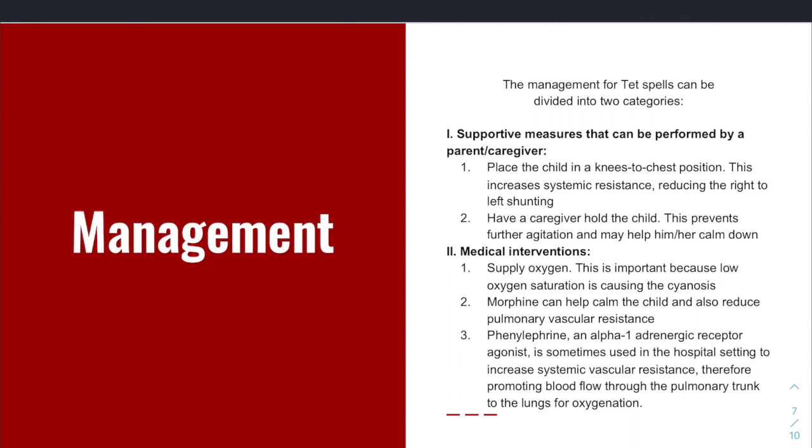Let's talk management. It's important that you assess the prognosis of the baby for what they need. Supportive measurements can be performed by patients and caregivers. So one thing that helps is holding the knees to the chest, which increases systemic resistance and reduces the shunting of blood from the right to the left. So it's going to reduce that cyanotic shunting occurring. And then keeping the child calm, of course. Remember, we said if the child is crying or getting agitated, that can lead to cyanotic spells. So keeping them calm is major.